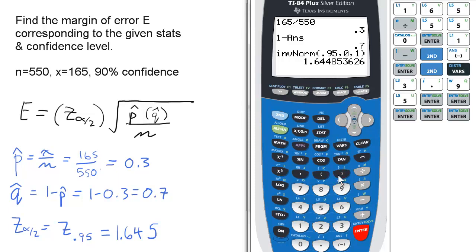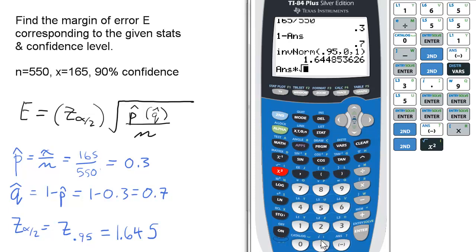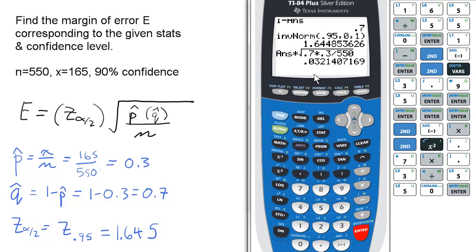Now, we have to enter this all into the equation. So it's going to be the answer times the square root of 0.7 times 0.3. The order doesn't matter because it's multiplication. Then divided by 550, and enter. So the answer is 0.032. In percents, that would be 3.2%.